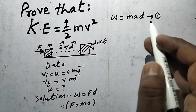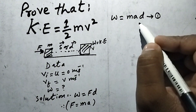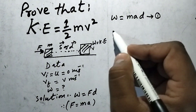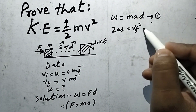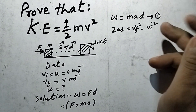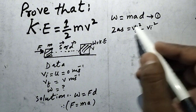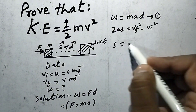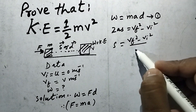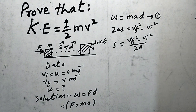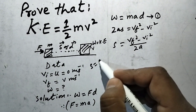First we will calculate D. Using the third equation of motion, which is 2aS equals VF square minus Vi square, we solve for S: S equals VF square minus Vi square upon 2 into a. Here S is equal to D.